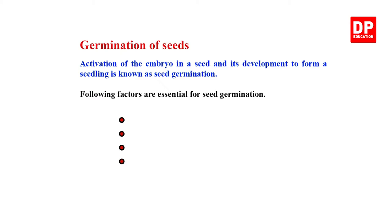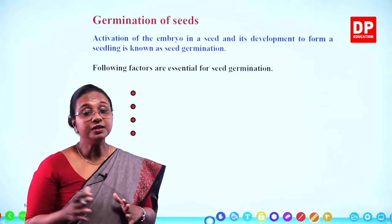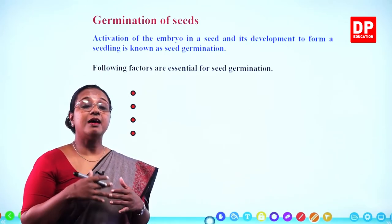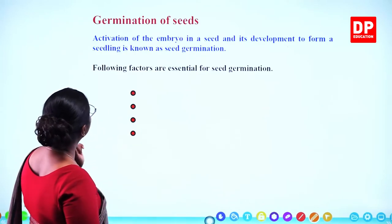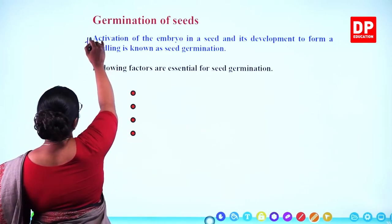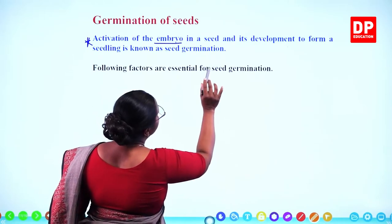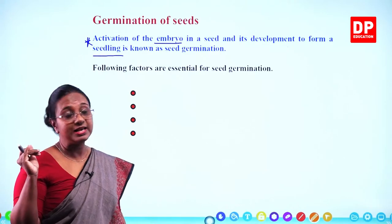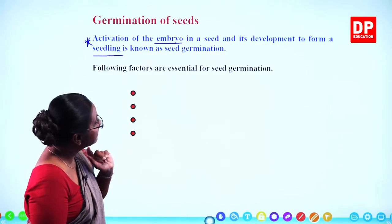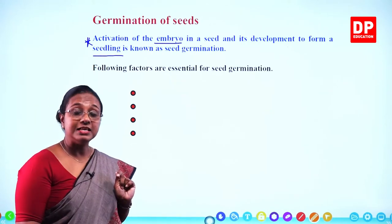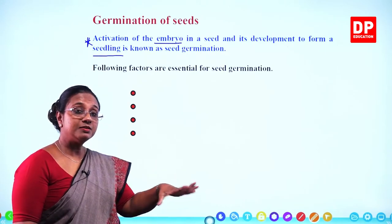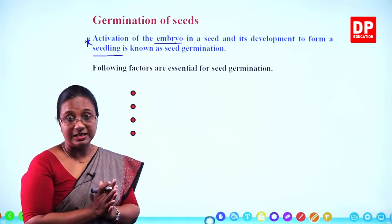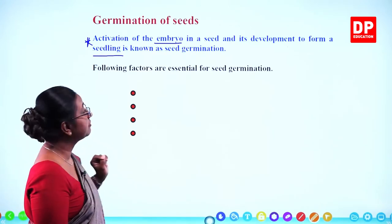Germination is the growth of a plant from a seed. Inside the seed, there is an embryo that develops into the plant. More precisely, germination is the activation of the embryo in a seed and its development to form a seedling — the young plant. Seeds need to find a new habitat with all the required conditions before they start germinating. The following factors are essential for seed germination.